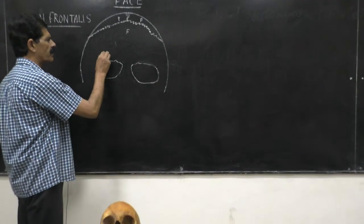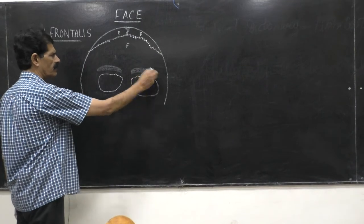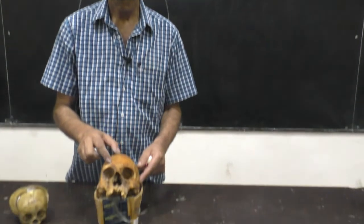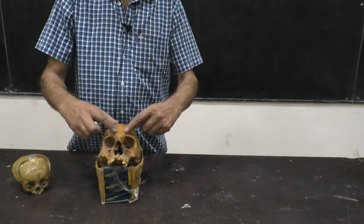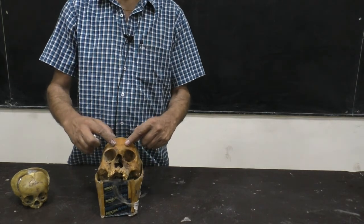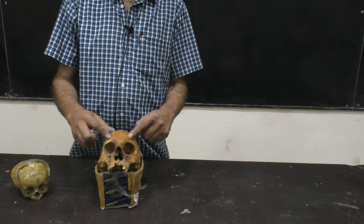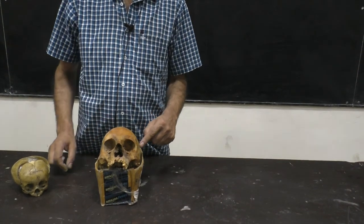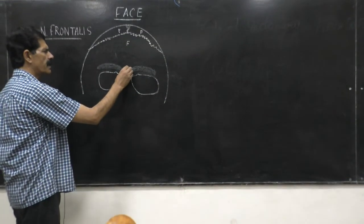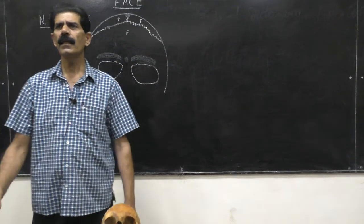Just above the orbit, this bony part where the eyebrows are present is raised. This raised part above the superior border of the orbit is called the superciliary arches, and it is more prominent in the male skull. In the middle, there is also a slightly raised area called the glabella.